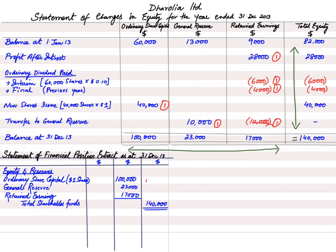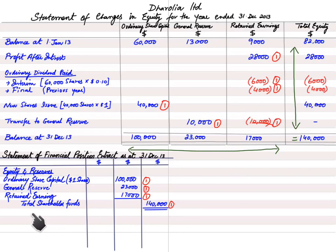After the equity section, you write non-current liabilities and current liabilities, which are the same as before. If the question asks for a statement of financial position extract for equity and reserves, the examiner may also show non-current liabilities or mention capital employed. Adding debentures and loans (non-current liabilities) to total shareholder funds gives the figure for capital employed.